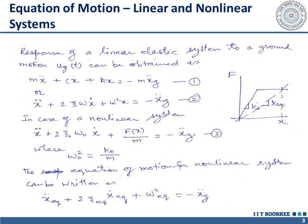This equation can be written in another form by dividing the whole equation by mass M and substituting C as 2·M·ξ·ω, giving: Ẍ + 2·ξ·ω·Ẋ + ω²·X = -Ẍ_G, where K/M becomes ω².